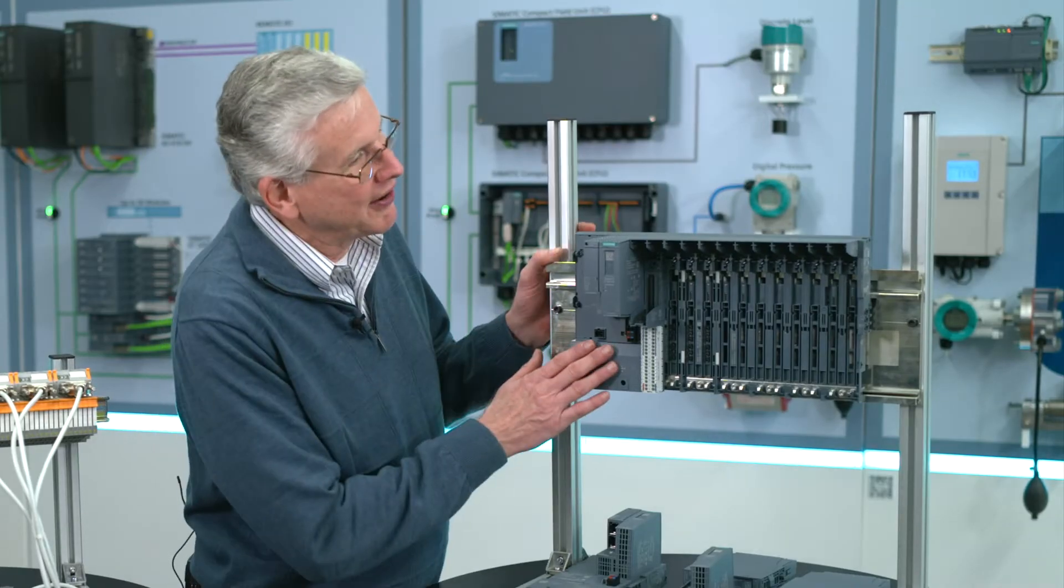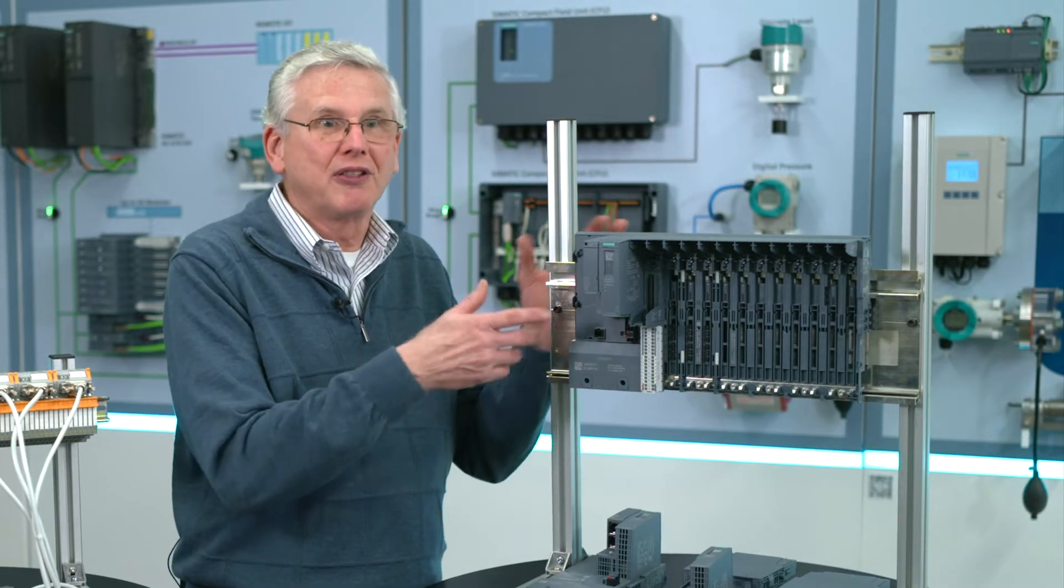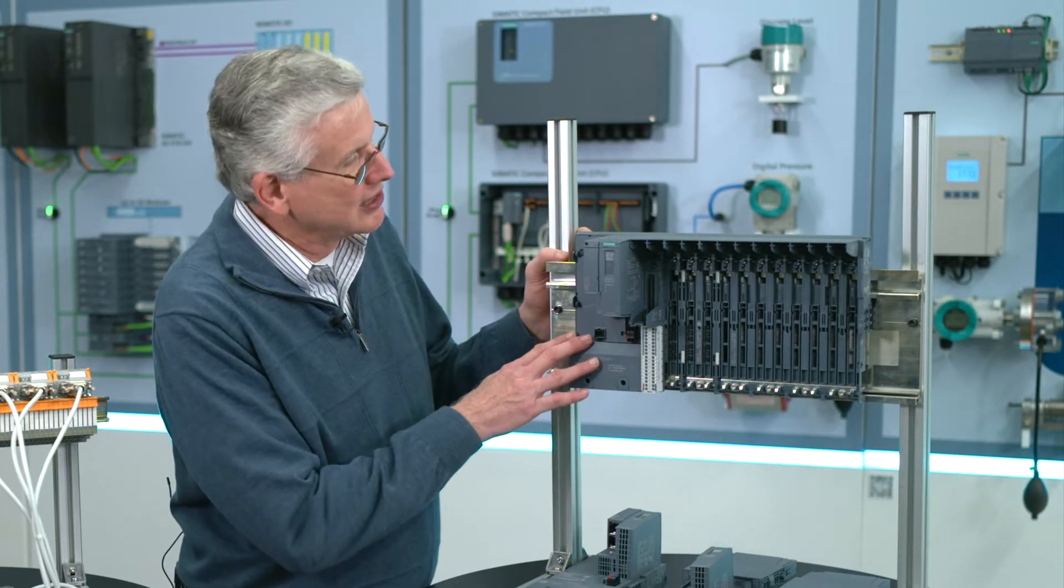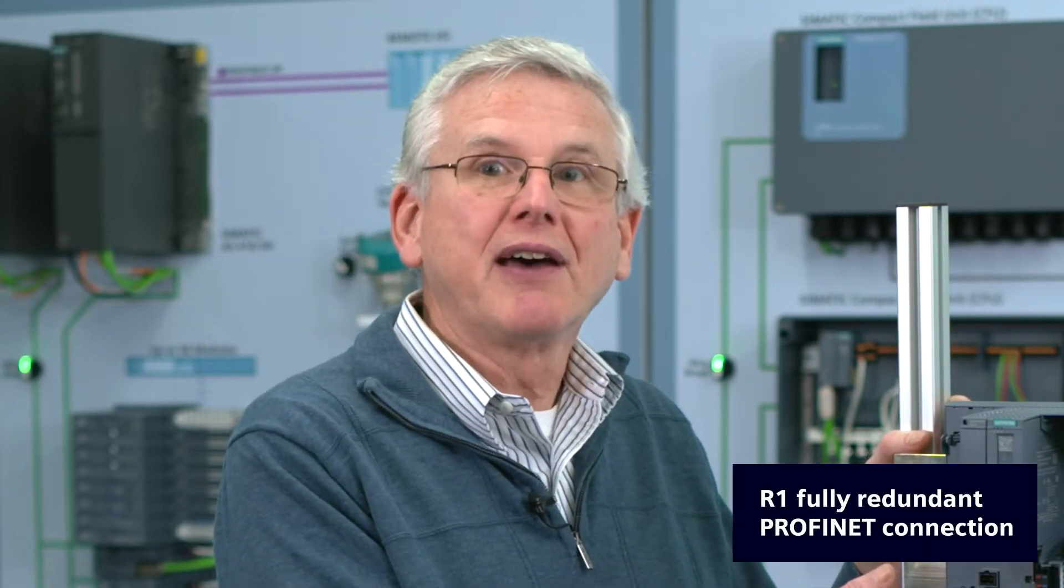So as you see here on the left-hand side, I've partially preassembled a rail so we don't have to go through all the screws and the connections. And if I want to start here on the left-hand side, we talked about R1, we talked about a fully redundant PROFINET connection, said we had two interface modules.